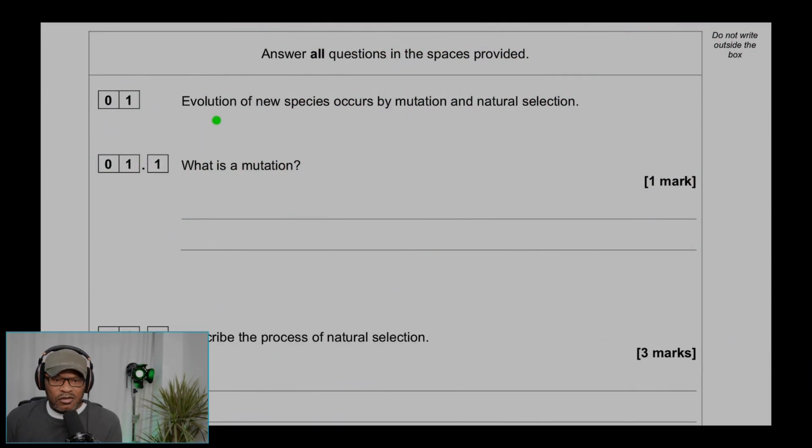Question 1: Evolution of species occurs by mutation and natural selection. Question 1.1: What is a mutation? A mutation is a change in DNA.